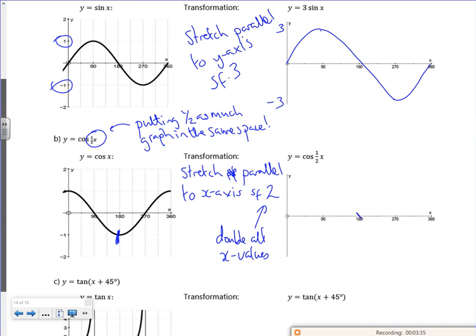So instead of plotting at 90, it plots at 180. Instead of plotting at 180, it plots at 360. So my graph goes up. But it's still between plus one and minus one. But you can graph it on your calculator.